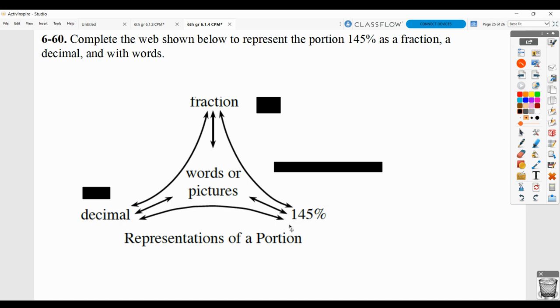Here they're giving you the percentage of 145%, and they want you to complete the portions web. So what's the decimal for 145%? It is 1 and 45 hundredths. Move the decimal two places to the left, drop the percent sign. The fraction for that would be 1 and 45 hundredths as a mixed number, which simplifies to 1 and 9 twentieths. Again, where we're getting that is 45 hundredths. Both top and bottom will divide by 5. And when you do that, you get 9 twentieths. Don't forget, if you can simplify a fraction, you need to do so. And then your words would be 1 and 9 twentieths.